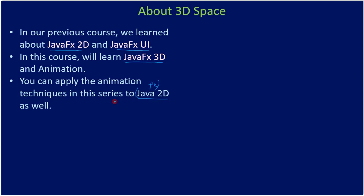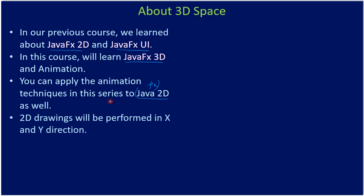We are going to cover 3D objects, but you can apply all these animation techniques to JavaFX 2D objects as well. 2D drawings are performed in the X and Y direction — that is why we call it 2D, since we only need two dimensions. For example, if we are drawing a line we will specify the coordinates in terms of X and Y — X is one dimension and Y is the second dimension.